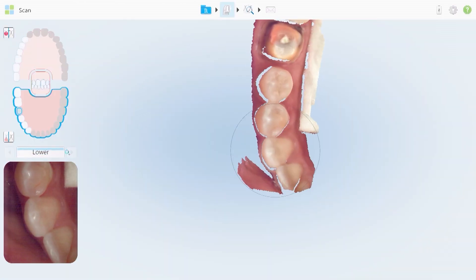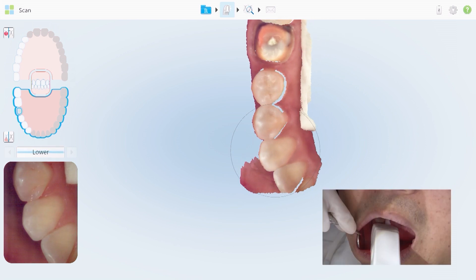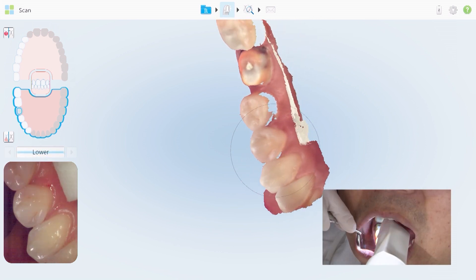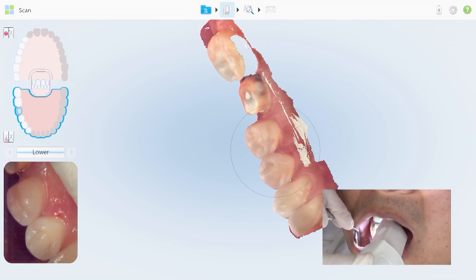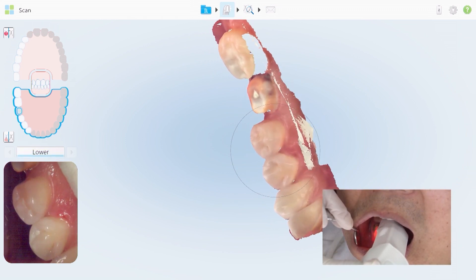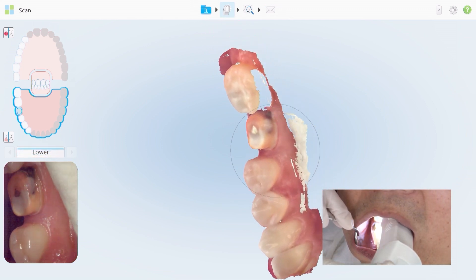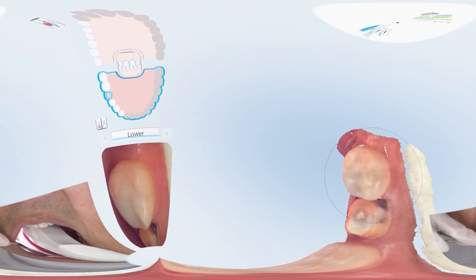Once I reach the canine tooth number 27, I'll rotate to the lingual. Now we'll capture the lingual surfaces of the adjacent teeth first in this case, and then begin working my way back to the last tooth.